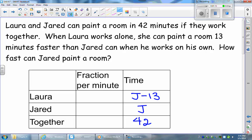Now we're going to come up with the fraction of the room that they complete in one minute. Working together, they can complete one out of 42 parts of the room in one minute. When Jared's working, he can complete one divided by j fractions of the room per minute.